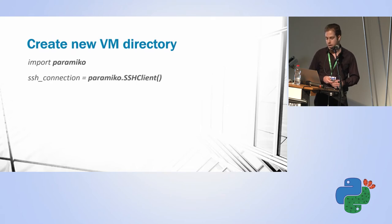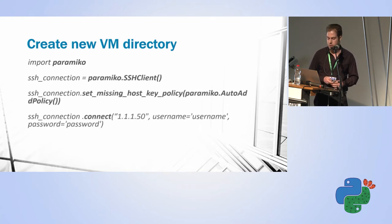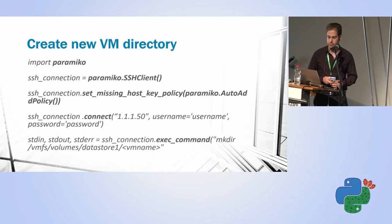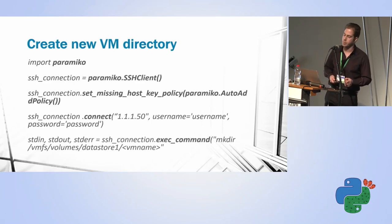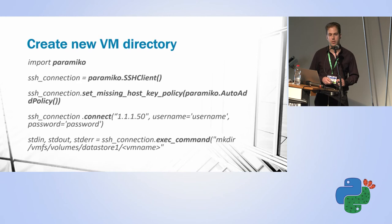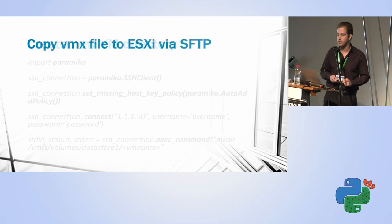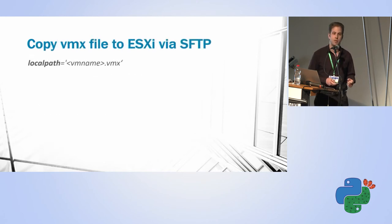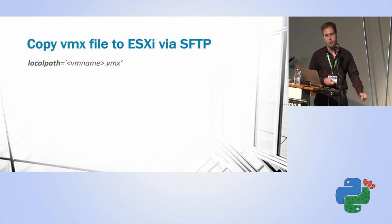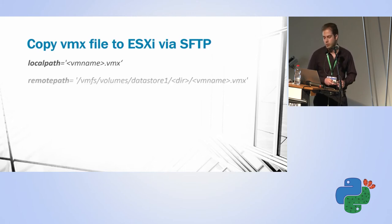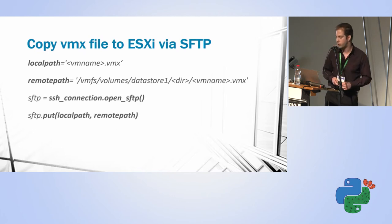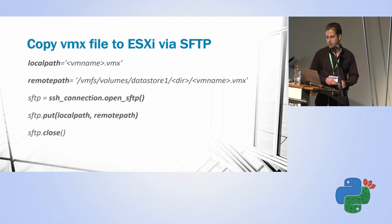To create a new VM, first I create a directory by sending the command via Paramiko. Once I have the directory, I copy my altered VMX file to the ESXi using SFTP — again using Paramiko — specifying the local path and the remote path.